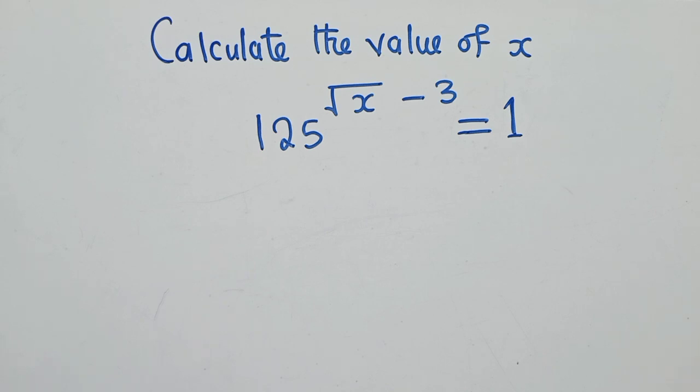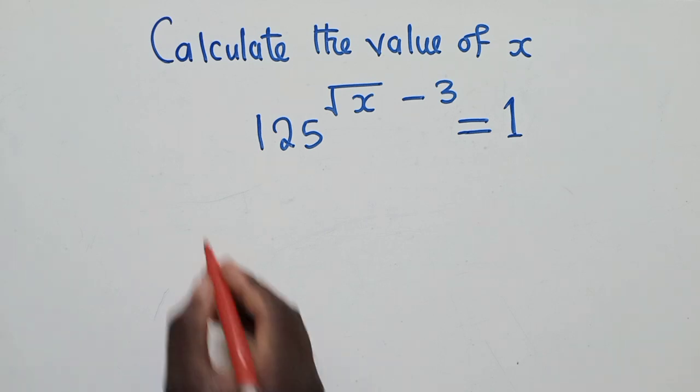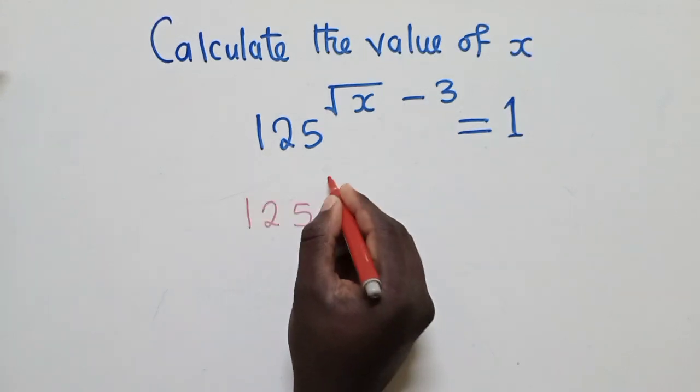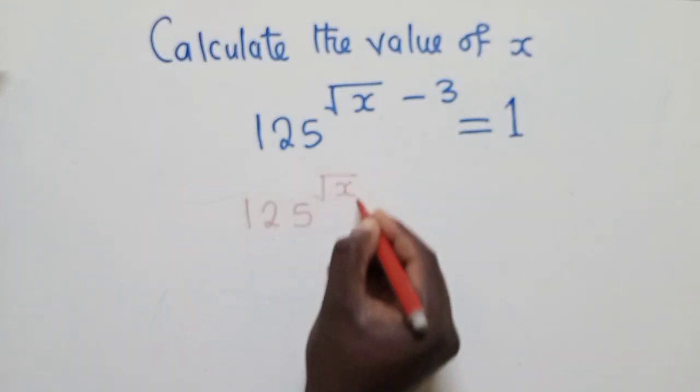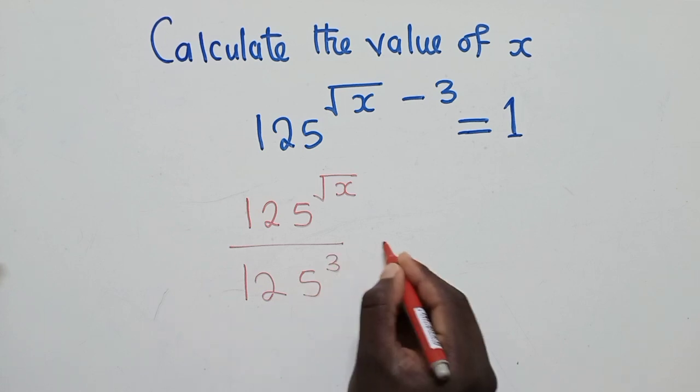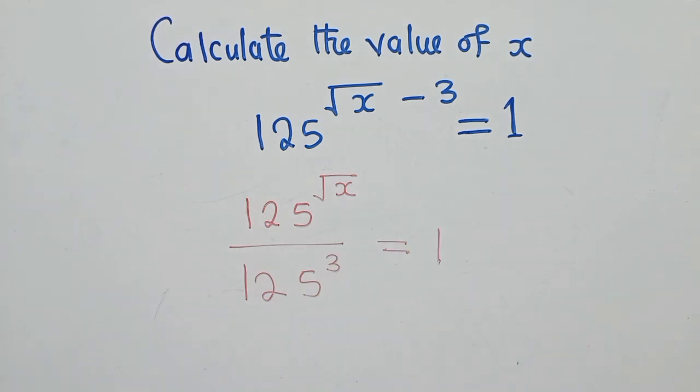Here we need to apply the laws of indices. So we're going to say 125 power root of x over 125 power 3 is equal. So the rule,